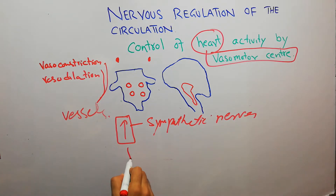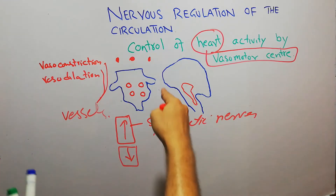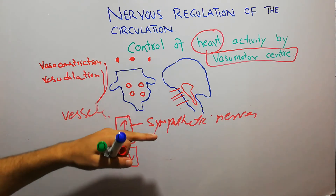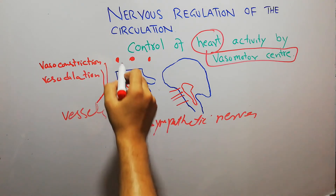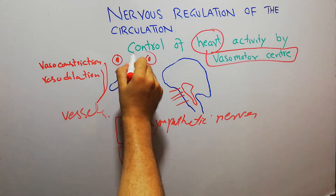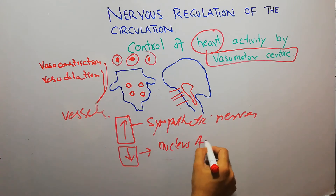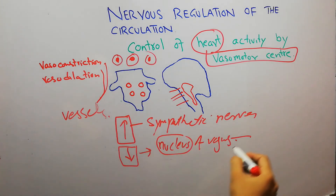When there is a need to decrease the heart rate — for example, when the heart rate is high — the medial portions of the Vasomotor Center send signals through the nucleus of the Vagus Nerve, and those signals go through the Vagus Nerve to the heart, causing a decrease in heart rate with the help of the parasympathetic nerve.